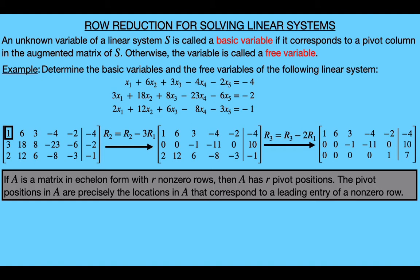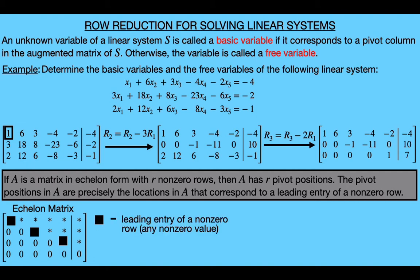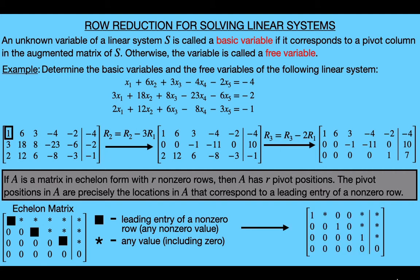Because if A is a matrix in echelon form with R non-zero rows, then we know that A will have R pivot positions, where the pivot positions in A are precisely the locations in A that correspond to a leading entry of a non-zero row. To see what I mean, consider an echelon matrix like the one shown here, where the squares represent the non-zero values of the leading entry of each non-zero row, and the stars are just arbitrary real numbers. Now we can always use the scaling and replacement row operations to make each leading entry equal to one and to make it the only non-zero entry in its column. And doing that would give us the reduced echelon matrix of this form, where the pivot positions are located at these positions. You can see that these are the same positions that the squares were in over here in our echelon matrix. So we don't need the reduced echelon form of a matrix to find its pivot positions — we only need an echelon form.